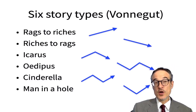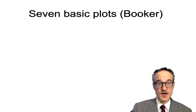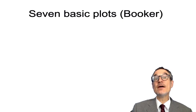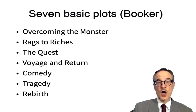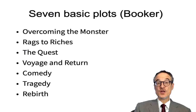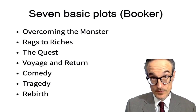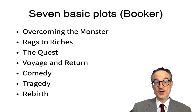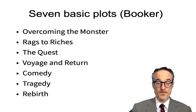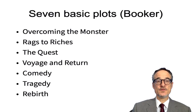Another writer has said there are seven different basic plots, similar to what Kurt Vonnegut talked about: overcoming the monster — for example, Dracula, or Star Wars — rags to riches, the quest, voyage and return, comedy, tragedy, and rebirth. So that's someone else's idea of seven basic plots.